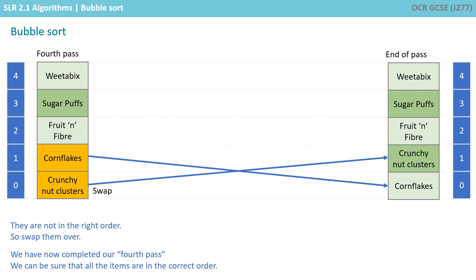We've now completed our fourth pass. We can now be sure that Weetabix, Sugar Puffs, Fruit and Fibre, Crunch Nut Clusters and Cornflakes are all in the correct order.